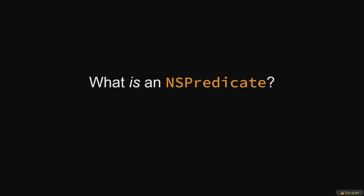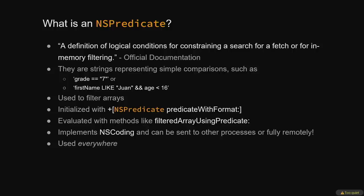We're nine slides in and I haven't talked about what an NSPredicate actually is. The Apple documentation says they are 'a definition of logical conditions for constraining a search for a fetch or for in-memory filtering.' This definition kind of sucks. They're simply strings used to filter objects and arrays — that's the majority of their use. You might select students in an array with predicates like 'grade equals 7' or 'firstName like Juan and age less than 16'. These strings are actually format strings, so you can use percent-escaped strings like %d to include a number passed to a predicate with format to initialize the NSPredicate. It's kind of like printf.